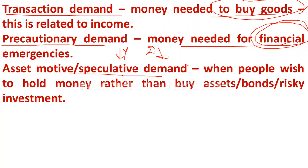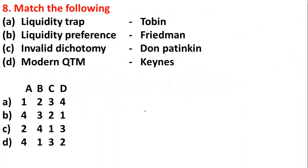The third motive is the asset motive or speculative motive. Here there is an opposite relationship between speculative demand for money and interest rates. When people wish to hoard money rather than buying assets, bonds, or risky investments, that is the speculative motive — people holding money to invest in the future in shares, bonds, etc.